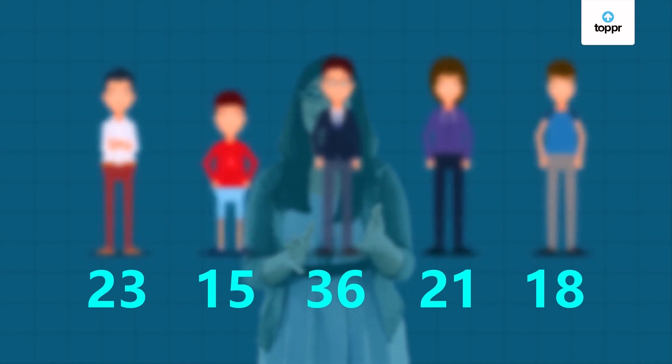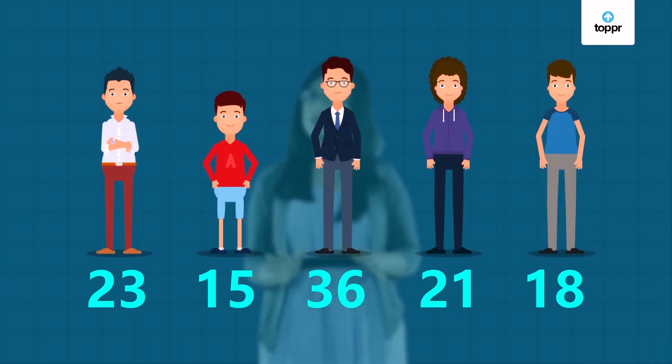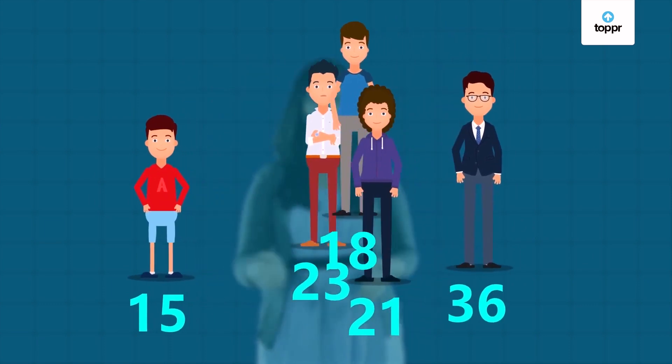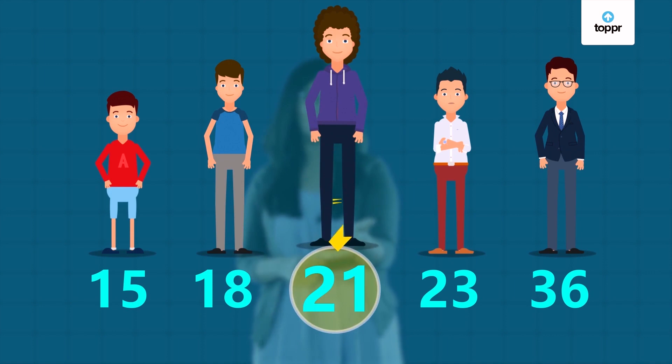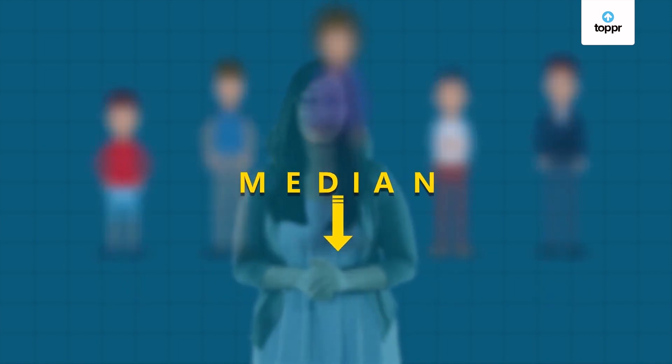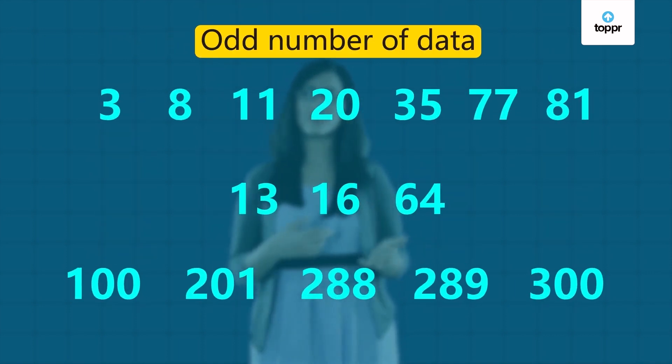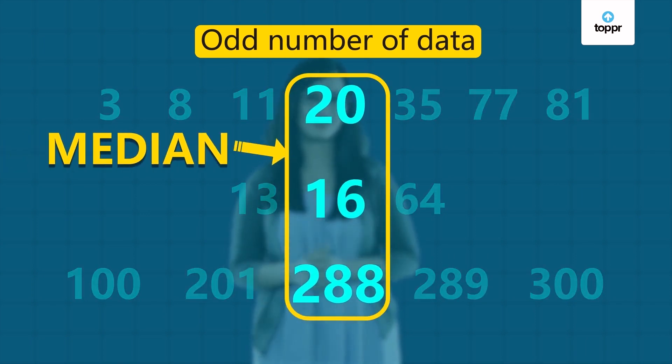Say we have the ages of 5 people. First, we have to arrange the values in either ascending order or descending order. Now, you just look at the middle-most value of the data set and that should be your median. Finding the median is easy when you have an odd number of values like this.